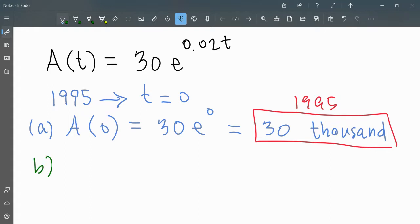In 2017, which is 22 years after 1995, we would evaluate the function when t is 22.